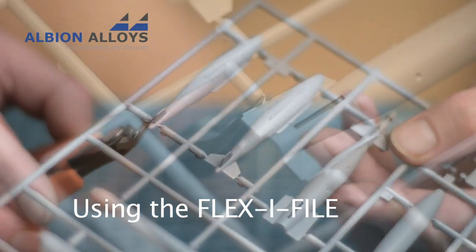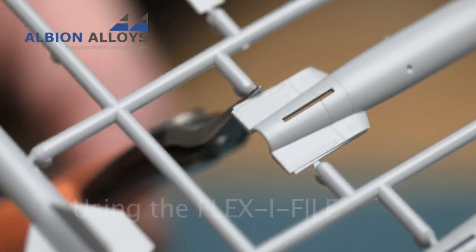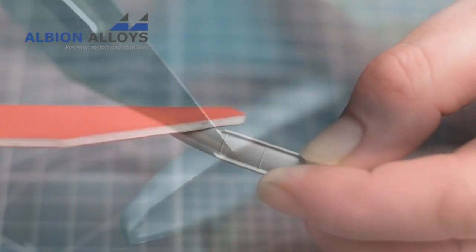I recommend buying a 1:48th modern missile set as these contain around 30 pieces that all require gluing, seam filling and sanding and offer an excellent way of practicing before moving on to the full kit.